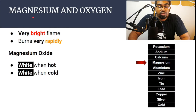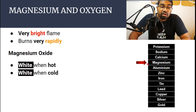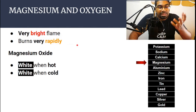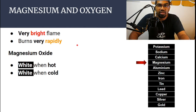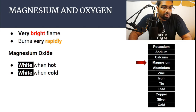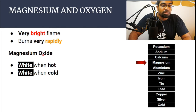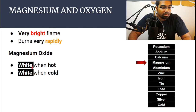Let's look at one of the most reactive metals — magnesium. Magnesium's position is quite high up in the reactivity series; it's very reactive. When we burn magnesium in oxygen, we get a very bright flame and the reaction is very rapid. The intensity and vigor of the reaction gives us an idea of how reactive it is. The product is magnesium oxide — remember, metal plus oxygen gives metal oxide. Magnesium oxide is white when hot and white when cold.